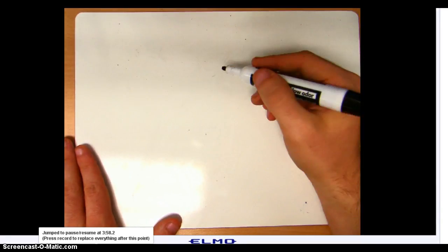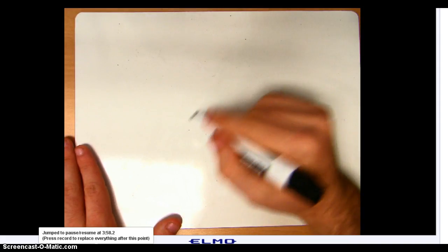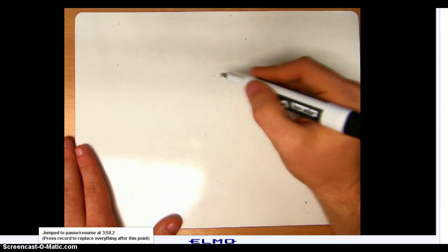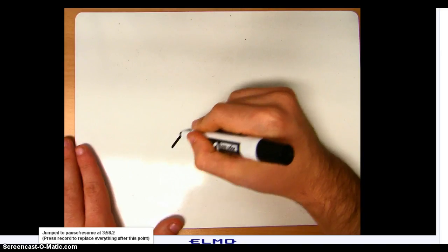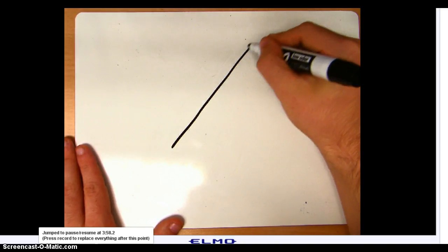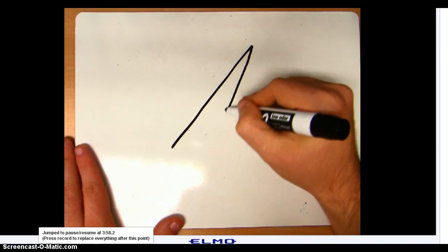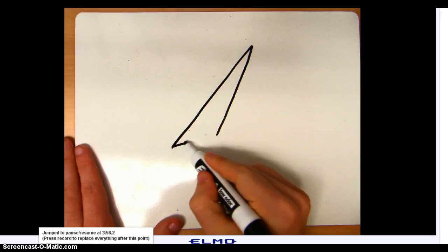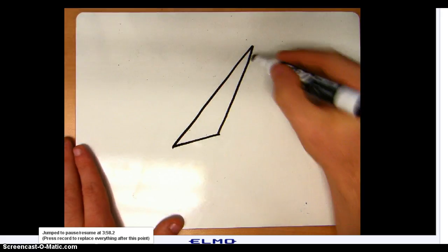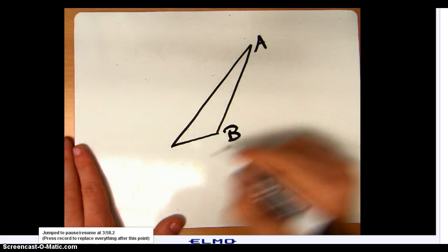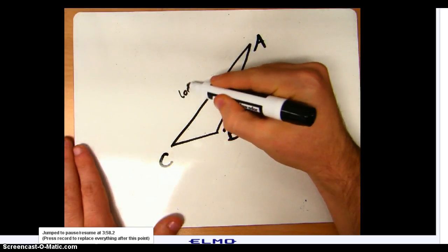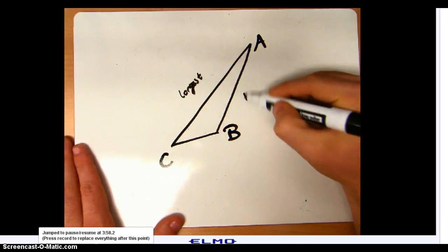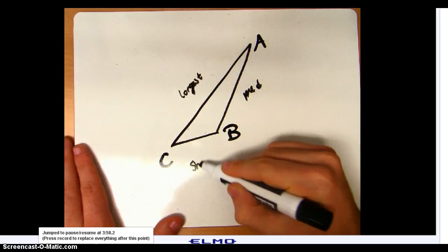Grab a scrap piece of paper, or a napkin, or a whiteboard — draw me a triangle that has one very long side, one kind of medium length side, and one shorter side, okay? We'll call the vertices A, B, and C. Here's our longest side, here's our medium side, here's our short side.